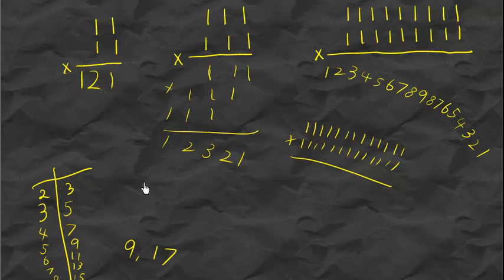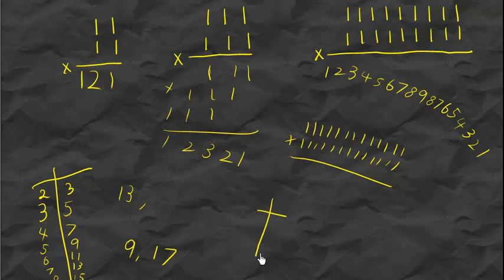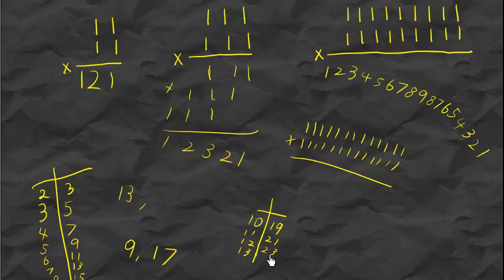First, let's find out how many digits thirteen ones times thirteen ones will have. Nine gives seventeen. Extending the odd-number sequence: ten gives nineteen, eleven gives twenty-one, twelve gives twenty-three, thirteen gives twenty-five. So thirteen ones times thirteen ones will have twenty-five digits.